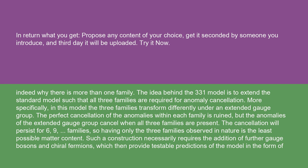More specifically, in this model the three families transform differently under an extended gauge group. The perfect cancellation of the anomalies within each family is ruined, but the anomalies of the extended gauge group cancel when all three families are present. The cancellation will persist for six or nine families, so having only the three families observed in nature is the least possible matter content.